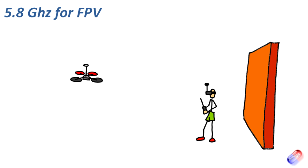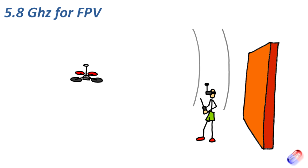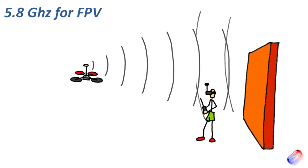The second problem with 5.8 gigahertz is something called multi-pathing. Multi-pathing is where not only does the signal get stopped by trees and other objects, it also reflects very easily — it bounces off stuff. One of the worst things you can do is stand in front of something that reflects the signal back at you, like a thick wall or a house. Your goggles will then receive not only the clean radio signal from the craft, but also the echoes and reflections from around you, causing a major problem with video quality.